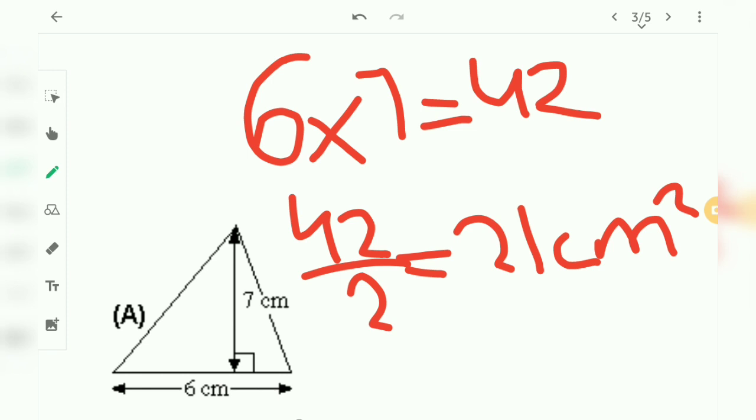So make sure you put the square symbol and also the cm symbol at the end. So this is what the final answer we get for the area of triangle. Let's move on to the next question.